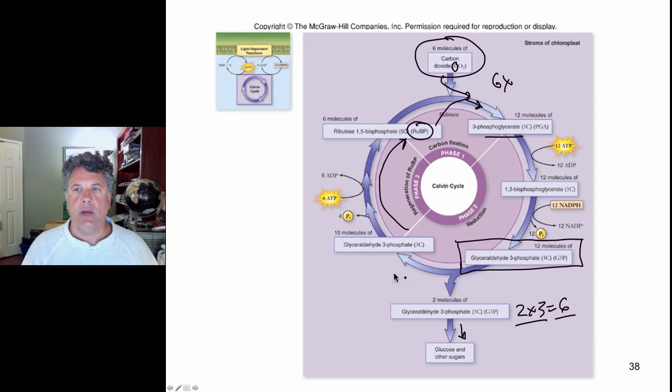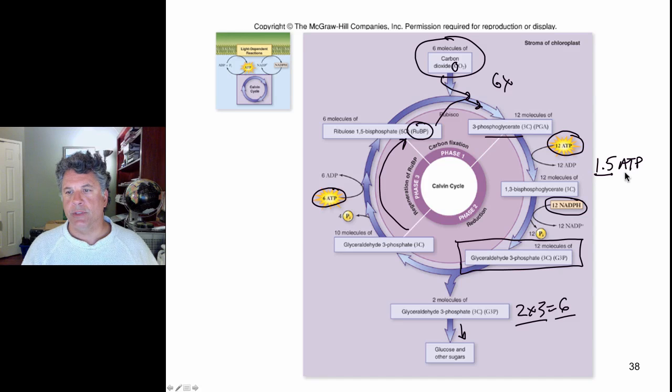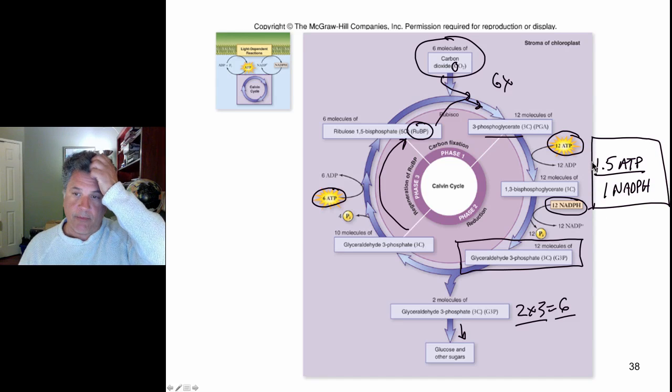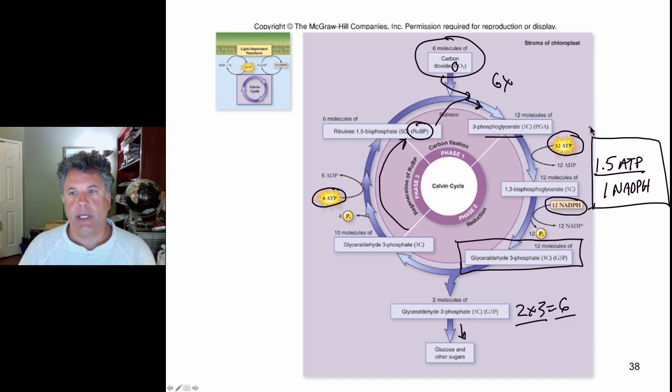This represents the fixation of carbon, the whole goal of photosynthesis in the first place. The required molecules are 12 ATP here, 6 ATP here, and 12 NADPHs. So we have a ratio of 1.5 ATPs used per every one NADPH used to drive this cycle, to fuel this cycle. Where did these molecules come from? Of course they came from the light-dependent reactions using photosystems 2 and then photosystems 1. And these reactions are light-independent as we've already discussed.